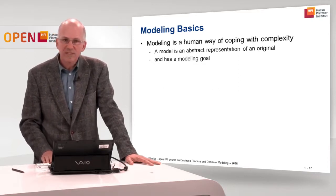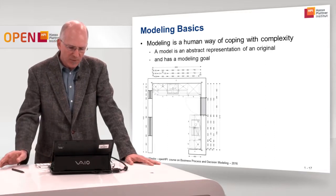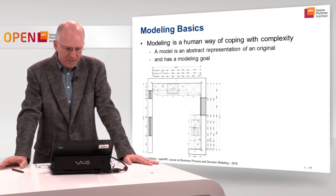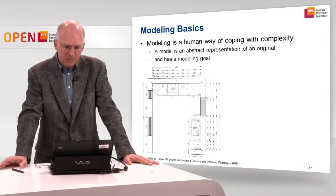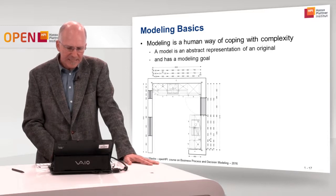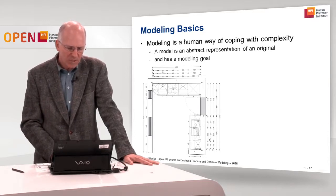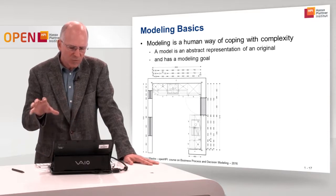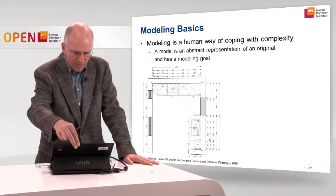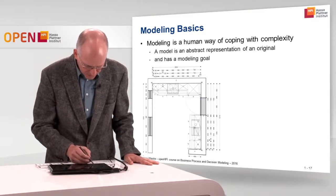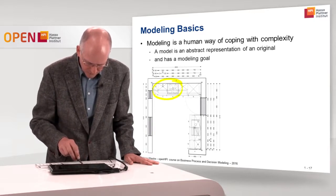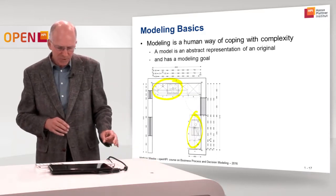A model always has a modeling goal. If we look at this example of a map of a room in a house, we see this abstract representation of the original — the original is the room itself. The goal of this model is to organize where kitchen appliances will be put. We see here that there are some appliances put here, and a sink is put here.